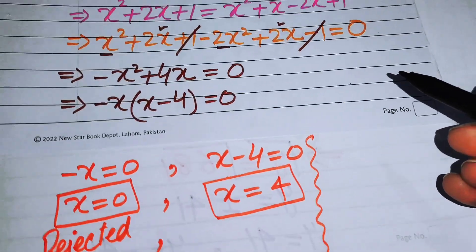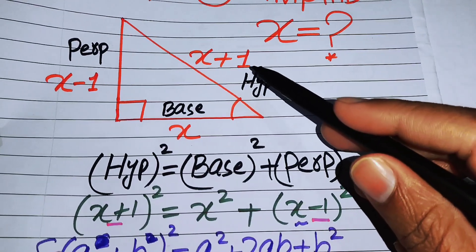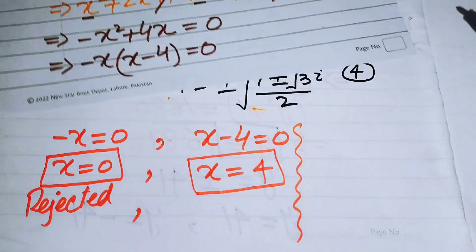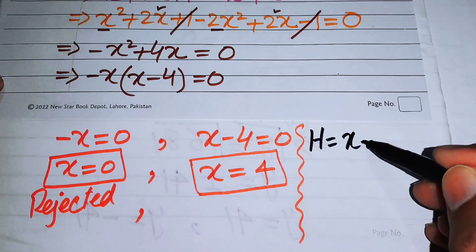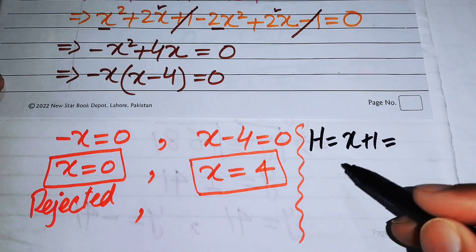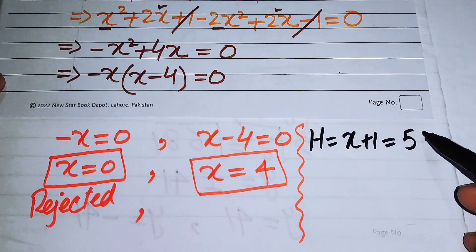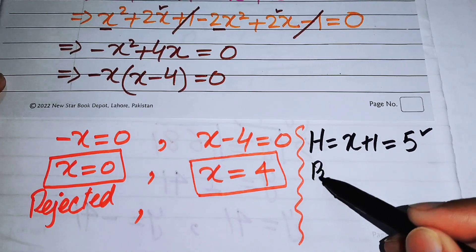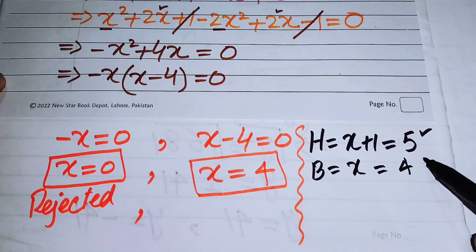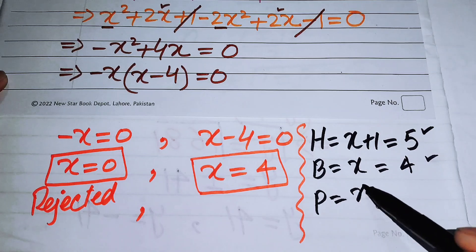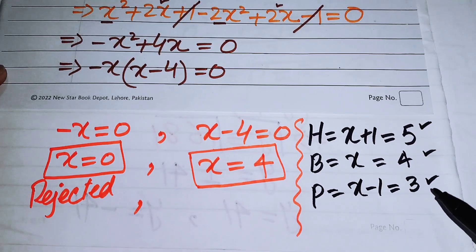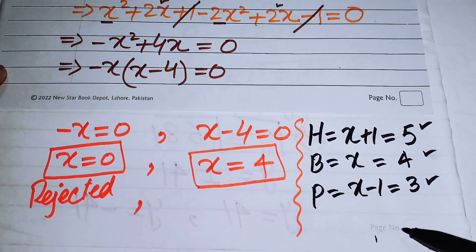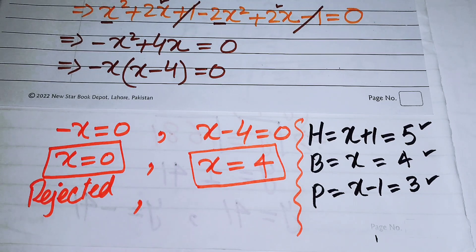Substituting X = 4: hypotenuse = X + 1 = 5, base = X = 4, and perpendicular = X − 1 = 3. All values are positive and non-zero, confirming this is a valid 3-4-5 right triangle. Therefore, X = 4 is the solution to the given problem. Thank you for watching — please subscribe for more videos.